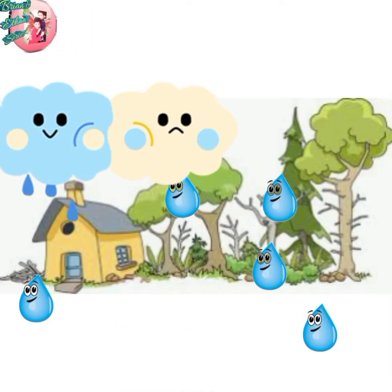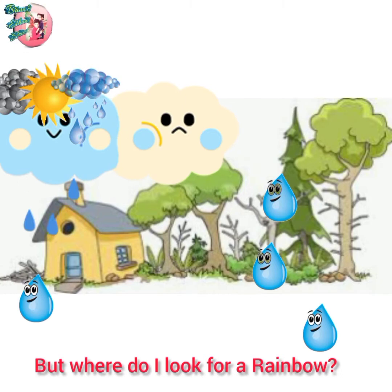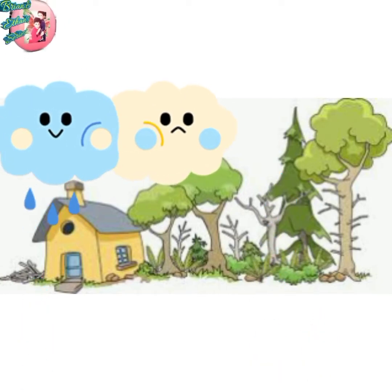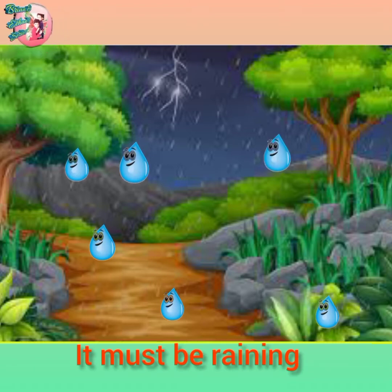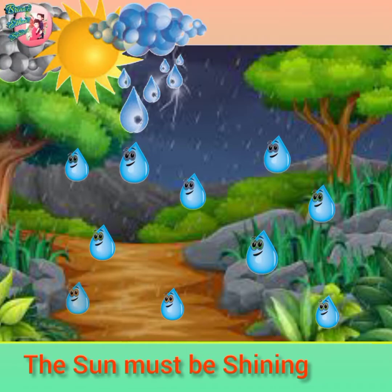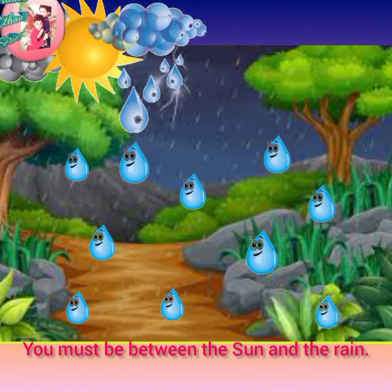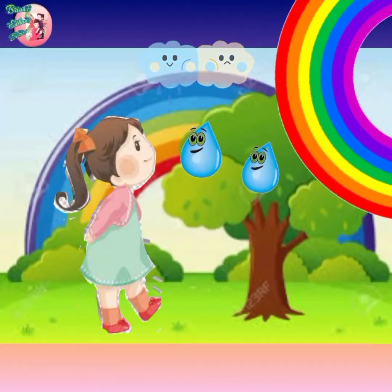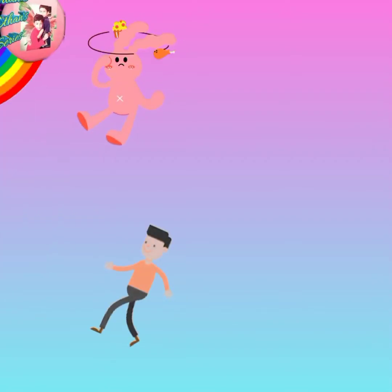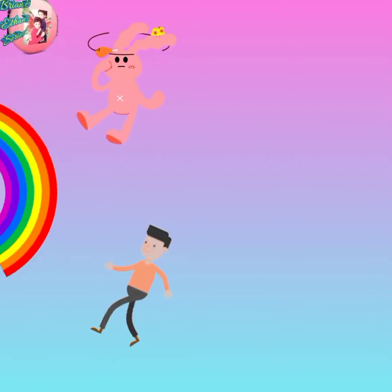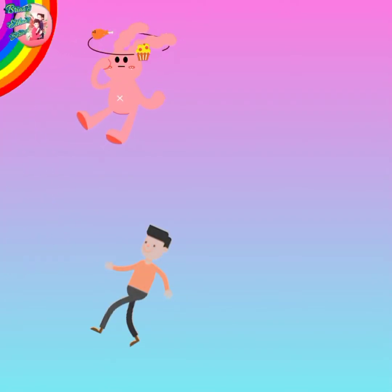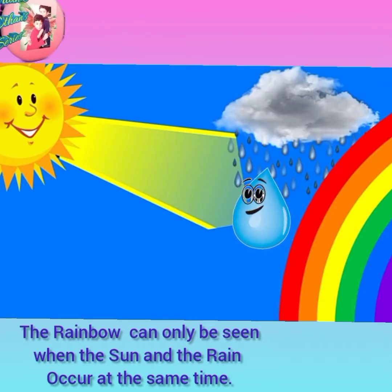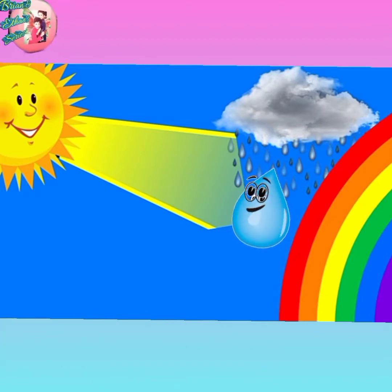But where do I look for a rainbow? You need to remember three things. First, it must be raining. Second, the sun must be shining. Third, you must be between the sun and the rain. Now let's enjoy watching the wonderful rainbow. The rainbow can only be seen when the sun and the rain occur at the same time.